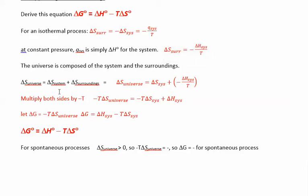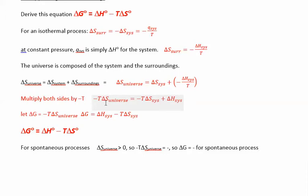Taking delta S of the surroundings and plugging it back in: delta S of the universe equals delta S of the system plus negative delta H of the system over T. Now the right side has everything to do with the system, which we can measure. Multiplying both sides by negative T, we get negative T delta S of the universe equals delta H minus T delta S of the system. We define this as a new variable called Gibbs free energy: delta G equals negative T delta S of the universe.